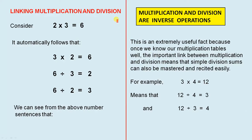Linking multiplication and division. Consider 2 times 3 equals 6 — it automatically follows that 3 times 2 equals 6, 6 divided by 3 equals 2, and 6 divided by 2 equals 3. We can see from the above number sentences that multiplication and division are inverse operations.